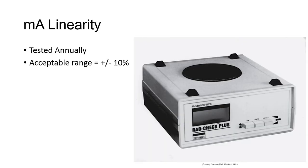MA linearity is defined as the alignment of a particular MA station relative to other stations and its output of radiation. This test assures that the MA station set at the console matches the radiation output of the X-ray tube. To test for MA linearity, a series of exposures can be taken at various MA stations on the console, and the dose received by the ion chamber should be recorded. Theoretically, a doubling in MA should double the radiation dose at the ion chamber. If a variance of plus or minus 10% is noted, the equipment should be serviced. This test is also performed annually.